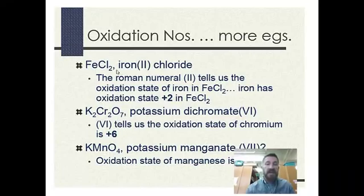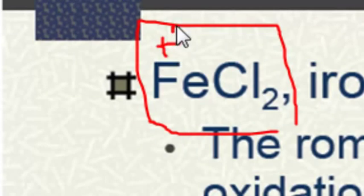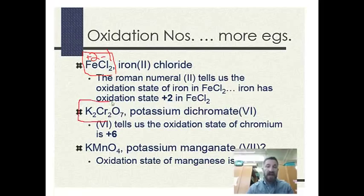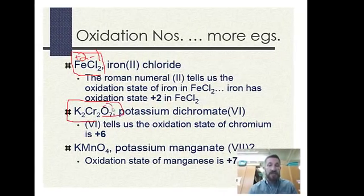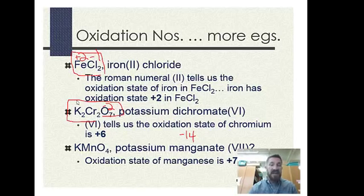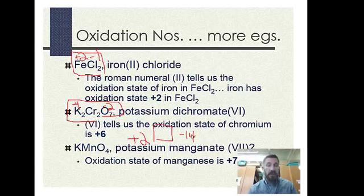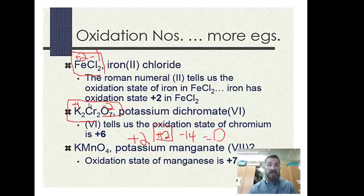In FeCl₂ (iron two chloride), iron's oxidation state is plus two and each chlorine is minus one. In K₂Cr₂O₇ (potassium dichromate), each oxygen is minus two; seven oxygens give minus fourteen. Potassium is plus one; two potassiums give plus two. So chromium must account for plus twelve total, meaning each chromium is plus six — chromium's oxidation number is positive six.